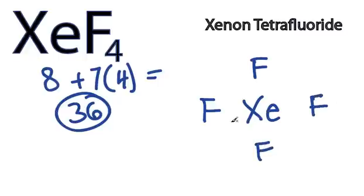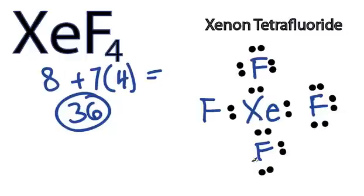We'll start by putting 2 between atoms to form chemical bonds, and then around the fluorines. We have 8, 10, 12, 14, 16, 18, 20, 22, 24, 26, 28, 30, and 32.